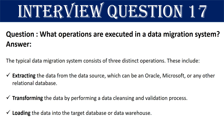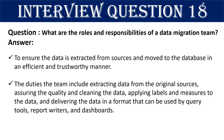Question 17: What operations are executed in a data migration system and in what order? The typical data migration system consists of three distinct operations: first, extracting the data from the data source, which can be an Oracle, Microsoft, or any other relational database; second, transforming the data by performing a data cleansing and validation process; and third, writing the data into the target database or data warehouse.